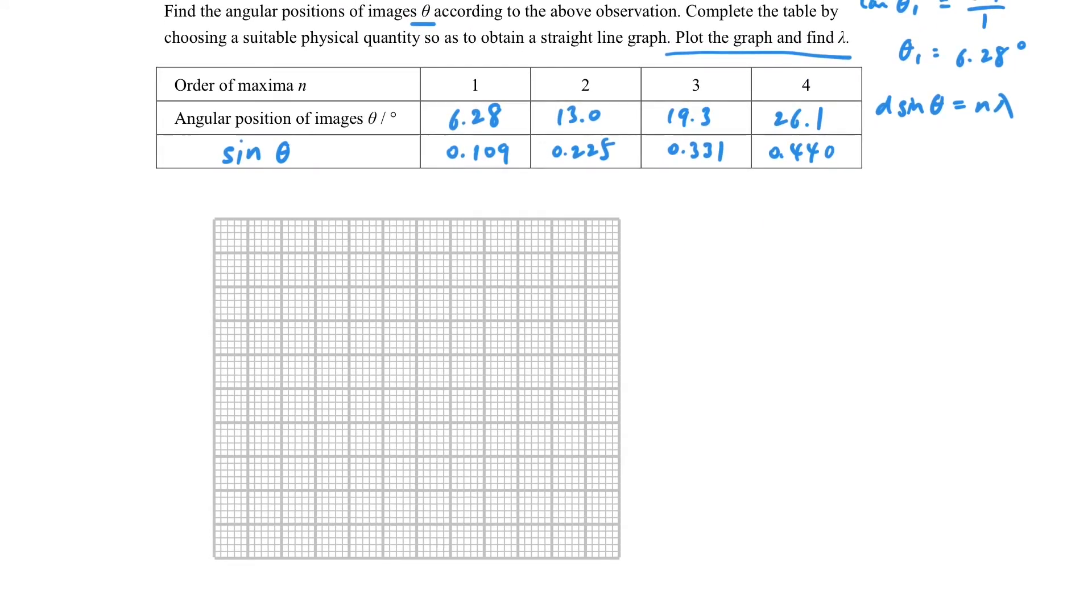But the problem is still there: what kind of graph should I draw? If our focus is to use d sin θ = nλ, then we can try to rearrange the items. We have to use the concept of y = mx + c. Here in this case we can rearrange it so the y-axis can be the sin θ, and then the x-axis can be the order number, which are the information that we have in the table.